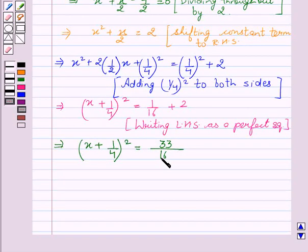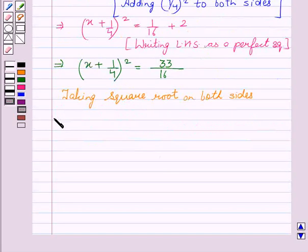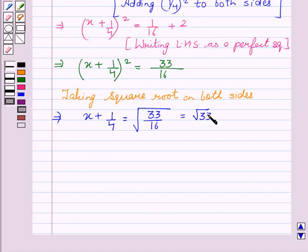Now, we will take the square root of both sides. This implies x + 1/4 = ±√(33/16), which equals ±√33/4.